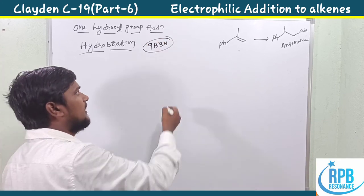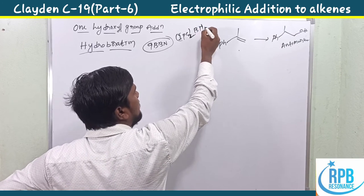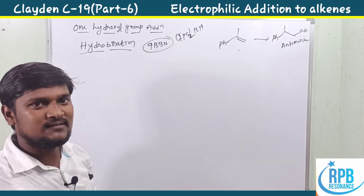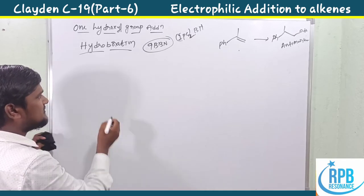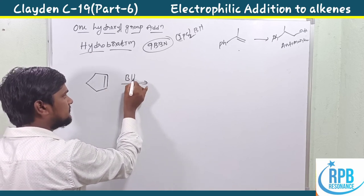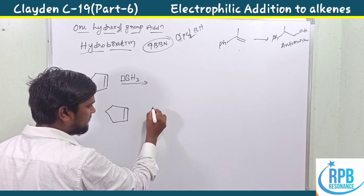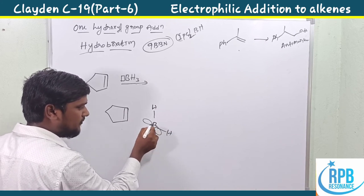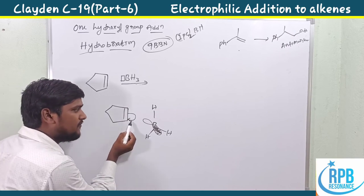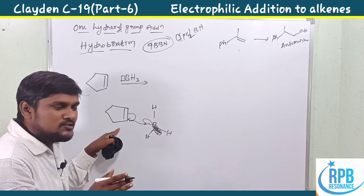For anti-Markovnikov addition, we use hydroboration. Common hydroboration reagents include 9-BBN (9-borabicyclo[3.3.1]nonane), IPC (isopinocampheylborane, a chiral borane), thexylborane, and disiamylborane — commonly used in advanced organic synthesis. Let's look at the mechanism: cyclopentene treated with BH₃. Boron has a vacant orbital, so the alkene's electron pair pushes into it.